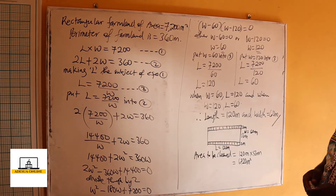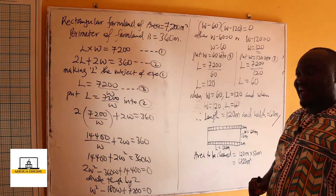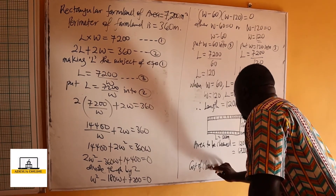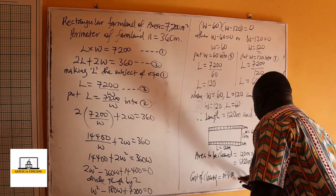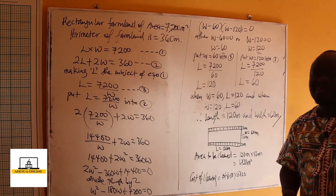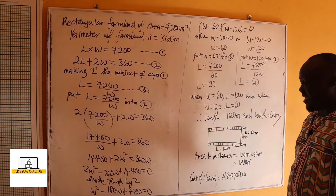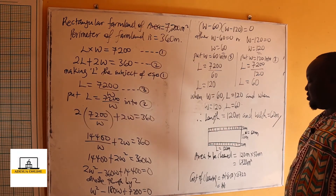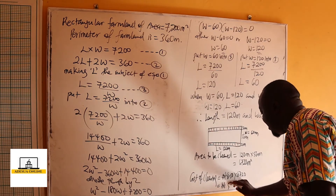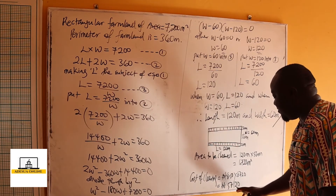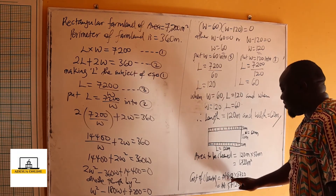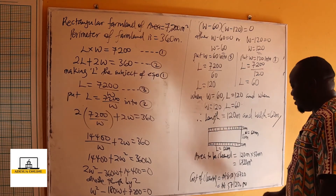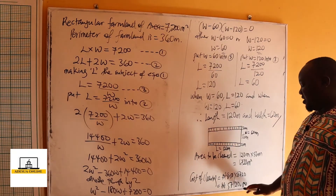This is the area left for us to clear. Since the charge is 8.50 naira per square meter, the cost of clearing equals 8.50 naira times 6,720, which gives us 57,120.00 naira.